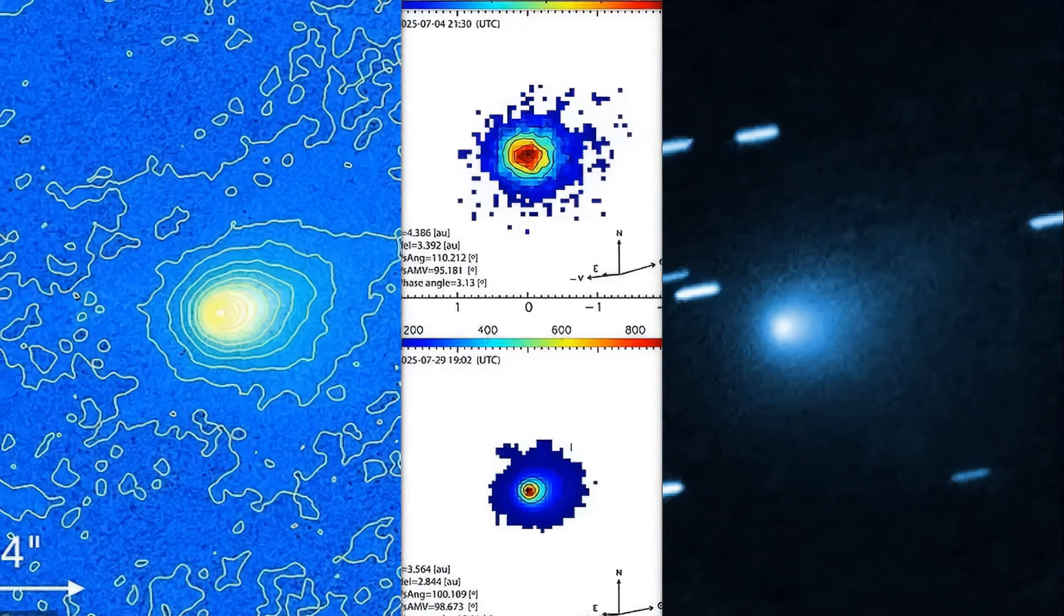Now they're saying that on July 21st, the Hubble telescope caught a glowing area at the front. Something that's never before been observed in a comet. That is their exact words. They're saying, what is it? Why is it glowing like this in the front like a headlight or something?